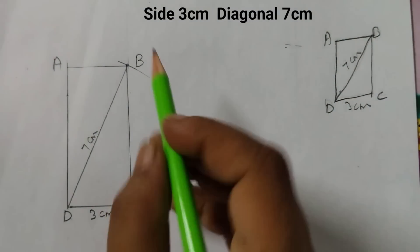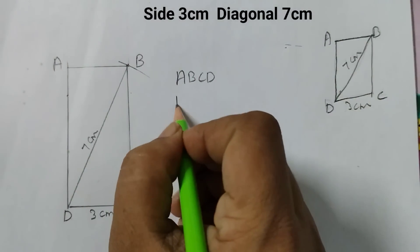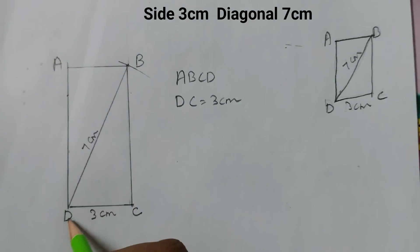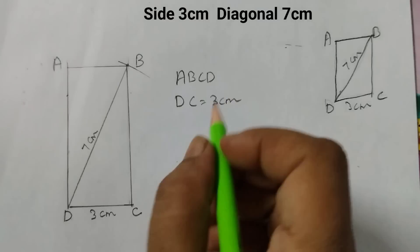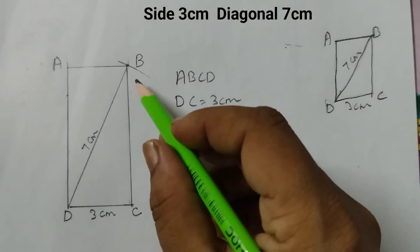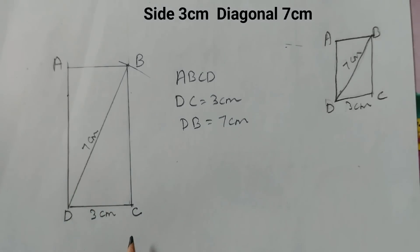So this is the rectangle ABCD where DC is 3 cm and this length from D to B is 7 cm. If you don't want to show the diagonal, you can just erase it off and just show the rectangle ABCD.